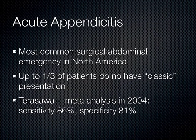Finally, the appendix — the most common surgical abdominal emergency in North America. About a third of patients don't have the classic presentation: generalized abdominal pain localizing to the right lower quadrant at McBurney's point, associated with anorexia and elevated white blood cell count. I've had patients eating Cheetos who later go to the operating room for appendicitis confirmed on pathology — many atypical presentations, which is where imaging comes in.